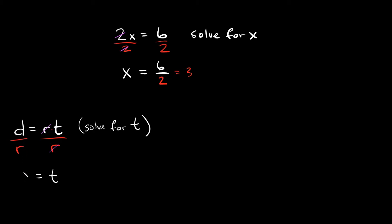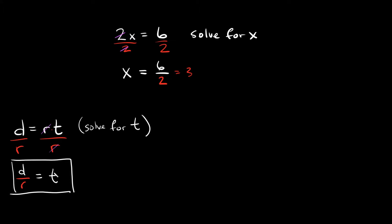So t is equal to d over r, or d divided by r. Now, these are just variables, so we can't simplify them anymore. d over r is the same thing as when we got 6 over 2 — but 6 over 2 we could simplify to 3. Here, d over r are just variables, so we can't simplify those anymore. So then this would be your final answer: t is equal to d over r.